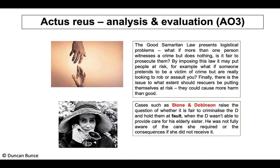Further problems with a good samaritan law include situations where someone pretends to be a victim and robs or assaults a would-be rescuer, or where intervening would put the rescuer at serious risk — for example, if an attacker is armed. This could cause more harm than good, making the law very difficult to make workable.